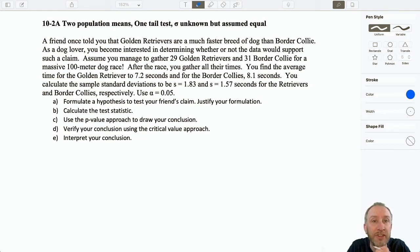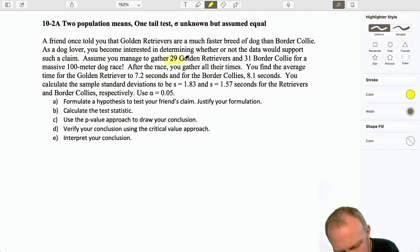Let's go through here and then we'll talk about these issues as they arise. A friend once told you that golden retrievers are a much faster breed of dog than a border collie. As a dog lover, you become interested in determining whether or not the data would support such a claim. So you manage to gather 29 golden retrievers and here I'm going to start to highlight important bits of information. 29 golden retrievers, 31 border collies for a 100-meter dog race. After the race, you gather all their times.